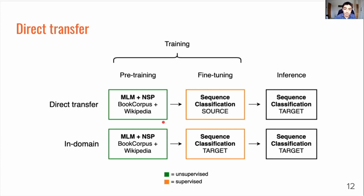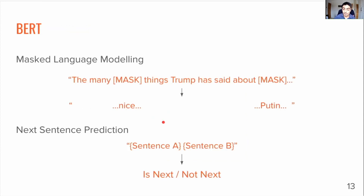Next I'll explain another transfer learning method we use: a state-of-the-art domain adaptive version of BERT called AdapterBERT. But first I need to go over some of BERT's pre-training objectives. With masked language modelling, random words in the training corpus are replaced with mask tokens; BERT is trained to predict what those words are, helping BERT learn context between words. With next sentence prediction, a dataset is formed comprising sentence pairs where 50% of the time sentence B is the sentence that actually follows sentence A in the original corpus, and 50% of the time it's a randomly selected sentence. BERT is tasked with predicting whether sentence B actually follows sentence A, helping it learn context across sentences and longer sequences of text.